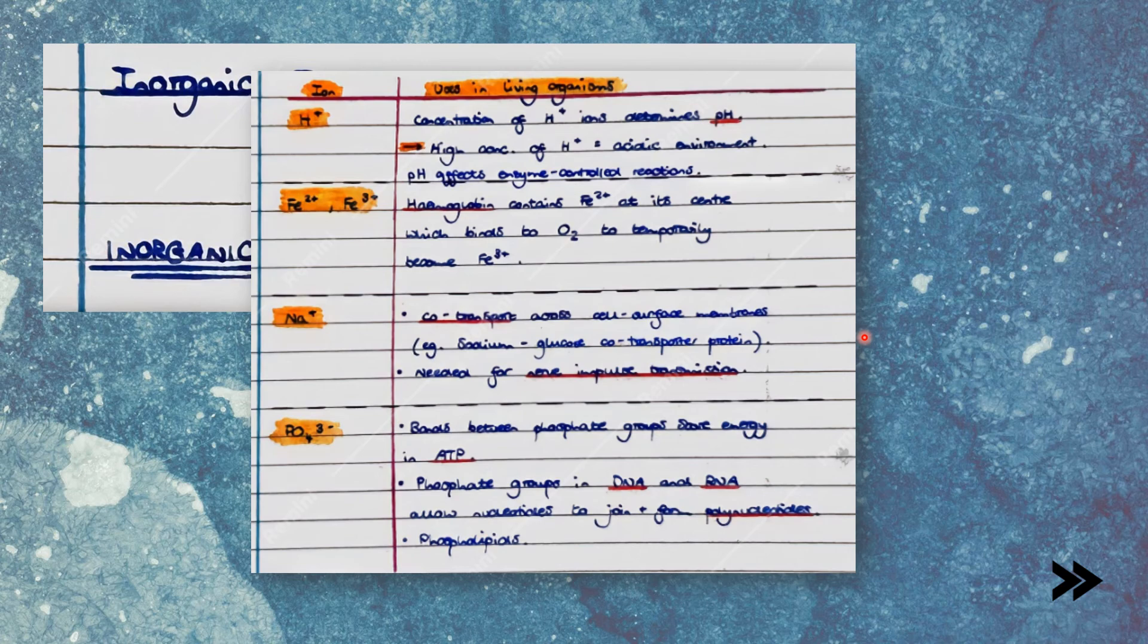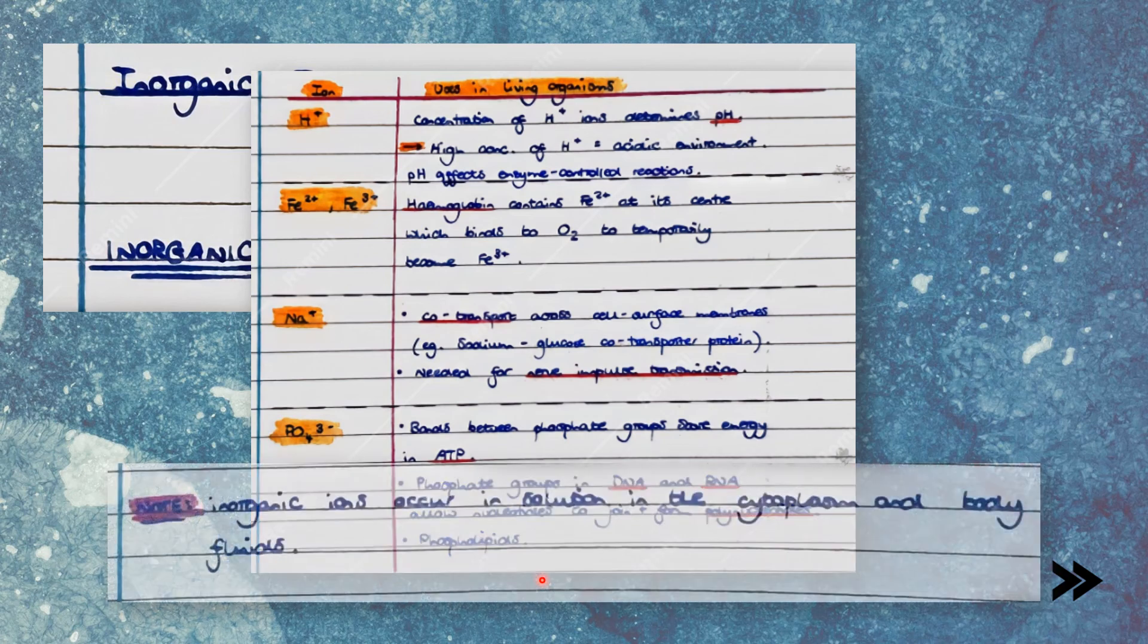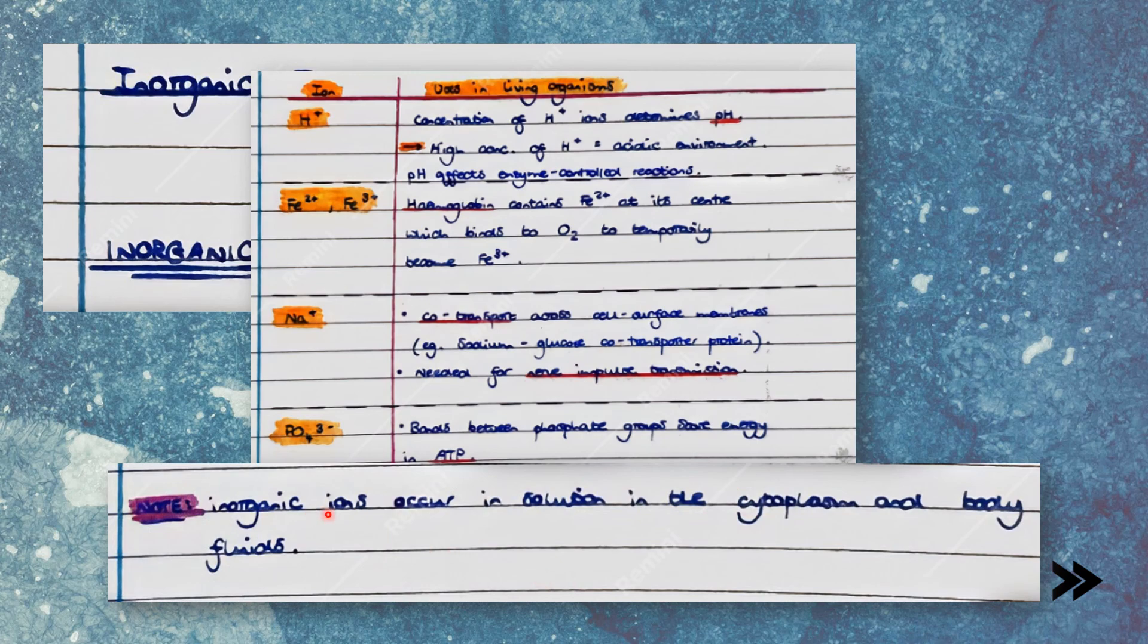Finally, we have phosphate ions. There are many uses for phosphate ions. For example, the bonds between phosphate groups store energy in ATP. Phosphate groups also allow DNA and RNA nucleotides to join to form polynucleotides. And finally, phospholipids. Note that inorganic ions occur in solution in the cytoplasm and in body fluids.